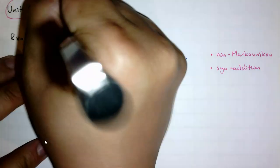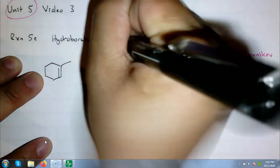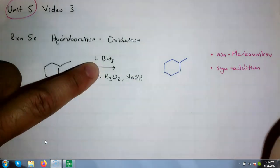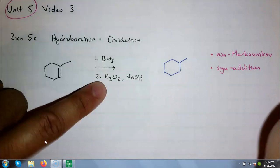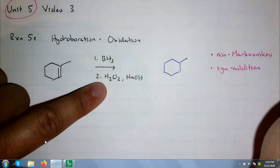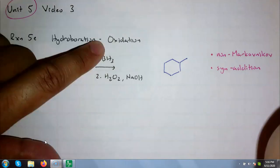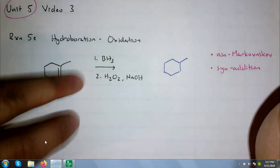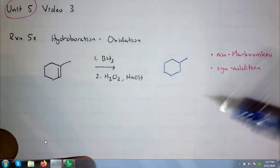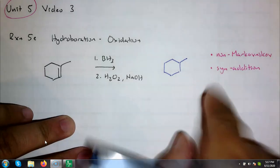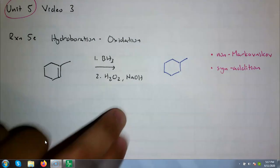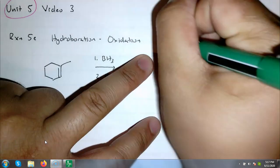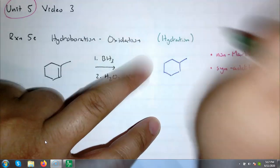Hydroboration dash oxidation. The hydroboration part is with this borohydride, BH3. That's the name of the reagent. And this is hydrogen peroxide, H2O2. It's a very good oxidizer. If you want to bleach your hair, you're oxidizing your hair, so you're using peroxide.